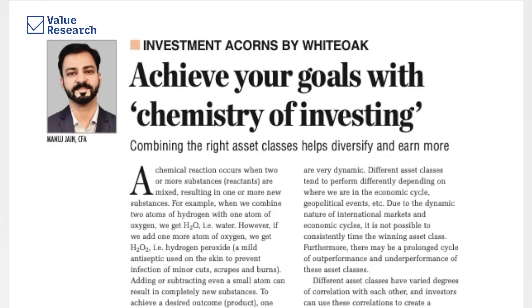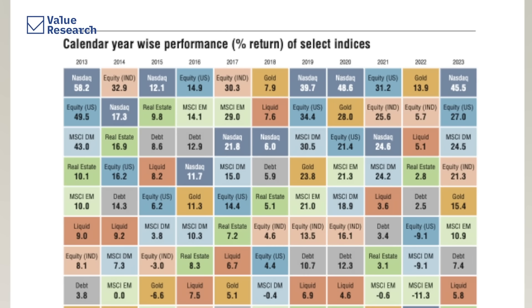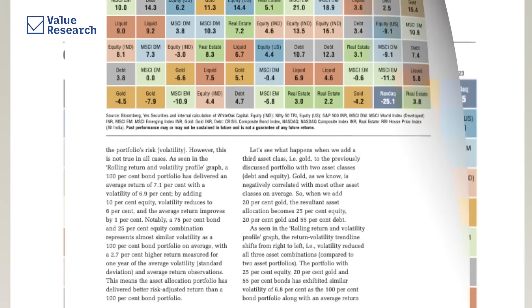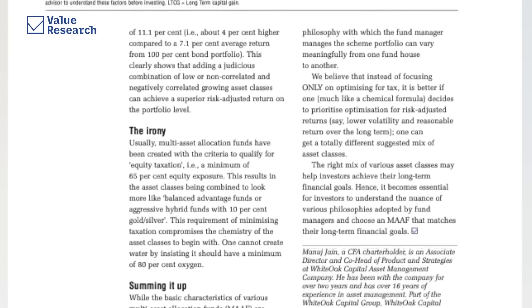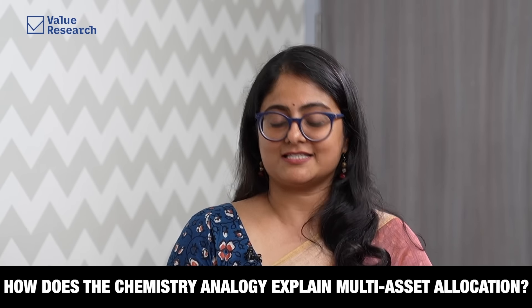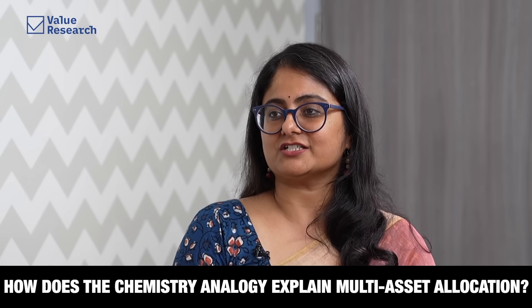Let's begin with your column 'Chemistry of Investing' in Mutual Fund Insight. You've drawn an intriguing comparison between chemistry and investing, particularly in how different asset classes combine like elements in a chemical reaction. Could you start by explaining how this analogy can help investors better grasp the concept of multi-asset allocation?